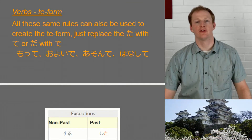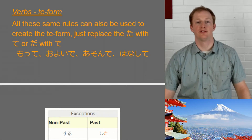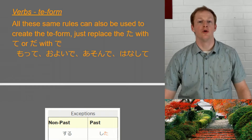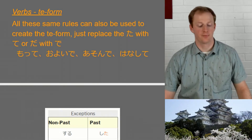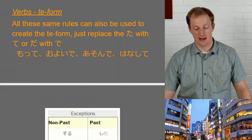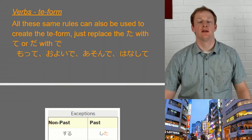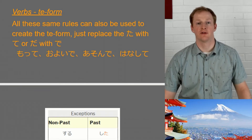One interesting thing to note is that we can also now make our te form. Once we've made our past form — the ta form — we replace ta with te, or da with de, and we have the te form. For example: motte, oyoide, asonde, hanashite. We'll look at the te form in more detail later, but know that it's a very useful verb conjugation.